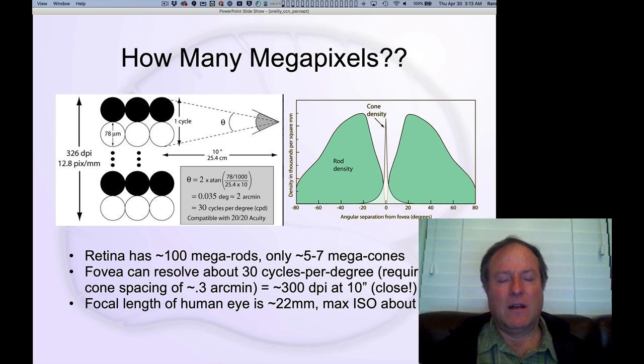This para-foveal region defines essentially the scope over which you can do any kind of significant level of object recognition. Beyond that it's really into the periphery of your vision where you really aren't seeing anything in any kind of great detail.